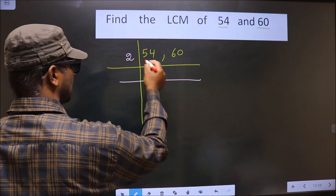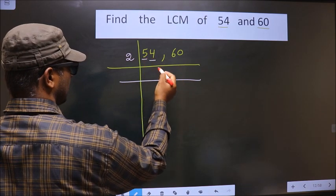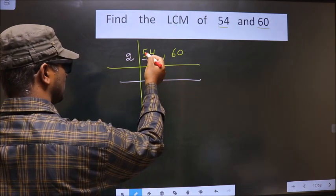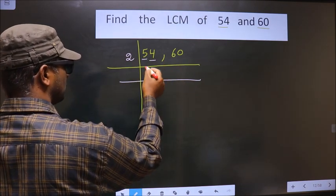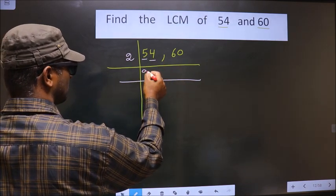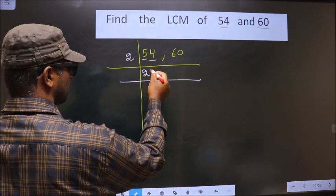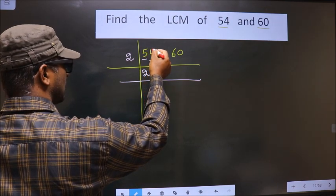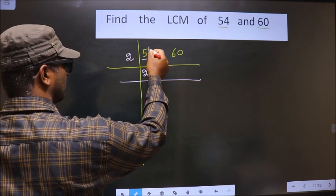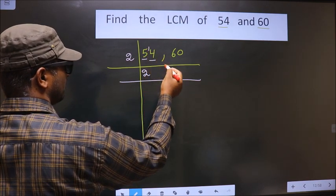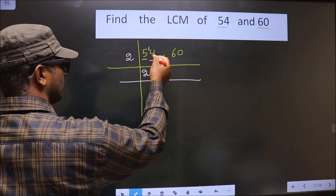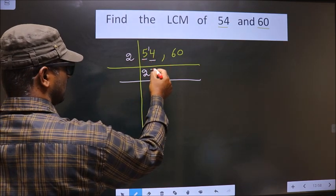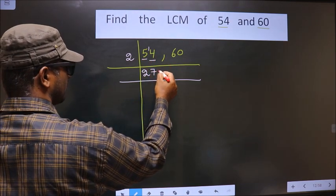Now, the first number is 54. A number close to 5 in the 2 times table is 2×2=4. 5 minus 4 is 1, carried forward making it 14. When do we get 14 in the 2 times table? 2×7 is 14. So 54 divided by 2 gives 27.